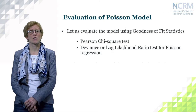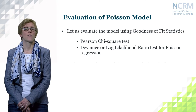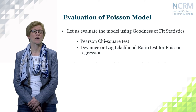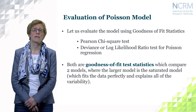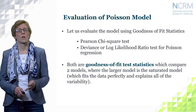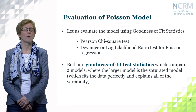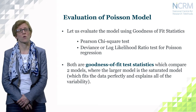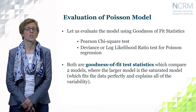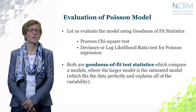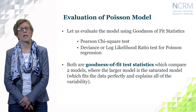Let's evaluate the Poisson model more formally using the Pearson chi-square test and the deviance, also called the log likelihood ratio test, for Poisson regression. Both are goodness of fit test statistics that compare two models: the current model — here the equiprobable model — against the saturated model, which is the larger model that fits the data perfectly and explains all of the variability. This comparison is essentially between observed and expected frequencies.